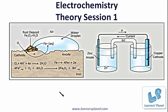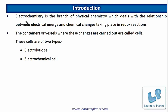We will be discussing about electrolysis, about the electrochemical cells, and about conductors. Electrochemistry is the branch of physical chemistry which deals with the relationship between electrical energy and chemical changes taking place in redox reactions. The containers or vessels where these changes are carried out are called cells. There are two types of cells: electrolytic cells and electrochemical cells.